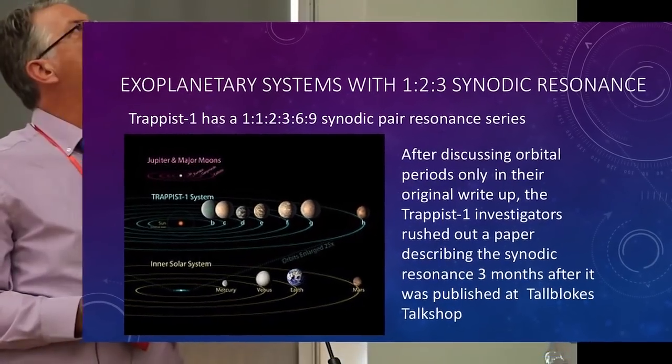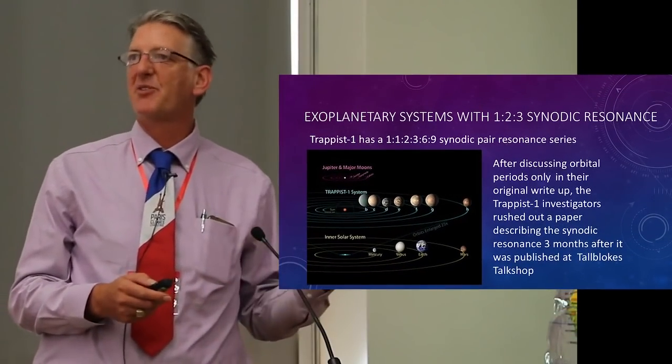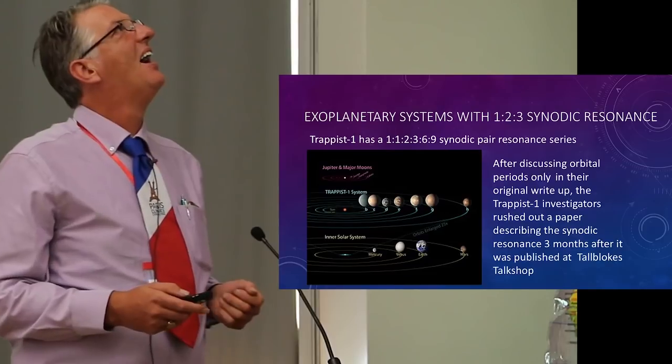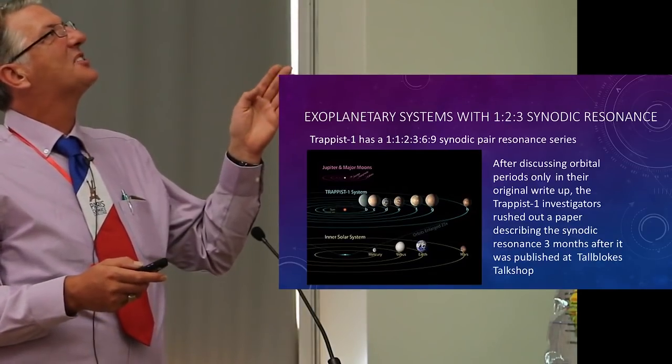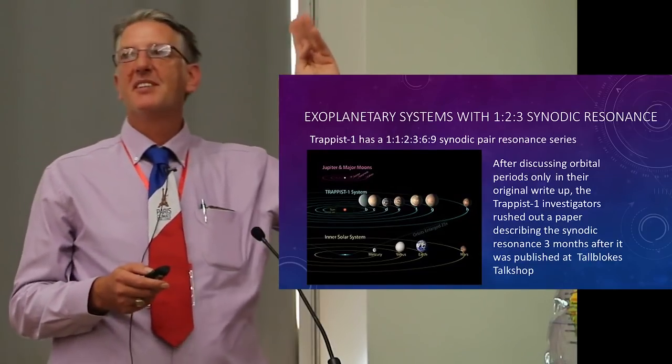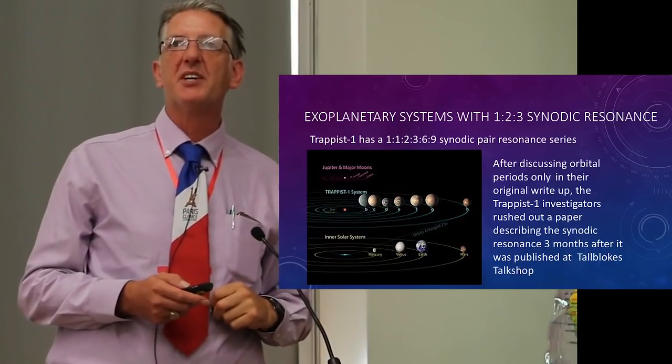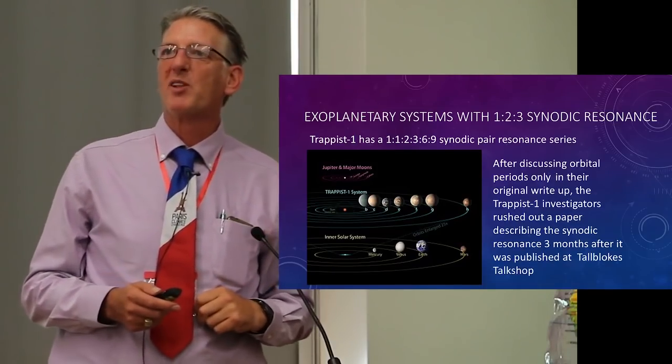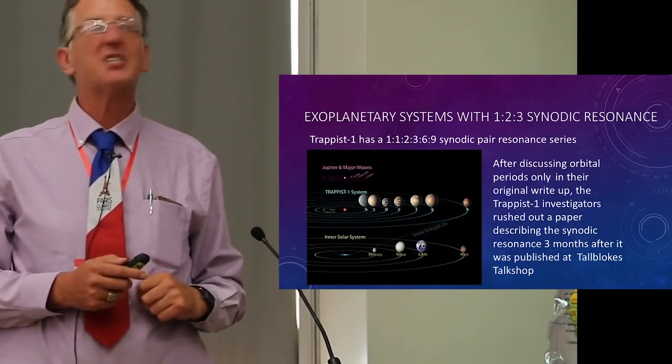In fact the series goes one, one, two, three, six, nine. Well obviously three, six and nine is also a three to two to one, or nine, six and three. And it was only after we pointed out that it was these synodic relationships that the original scientists who'd done the investigation suddenly stopped talking about orbital periods and rushed a paper out saying look at all these synodic pair relationships.